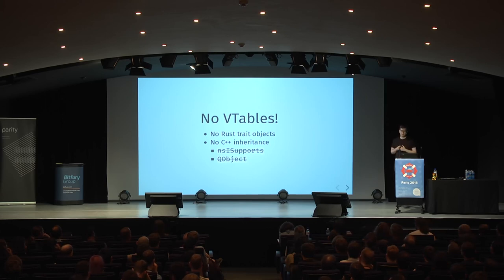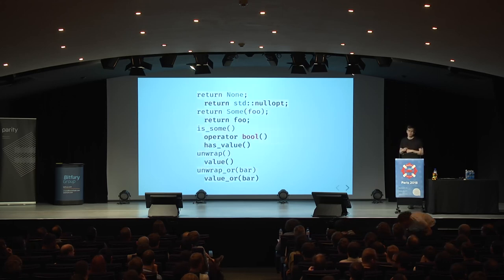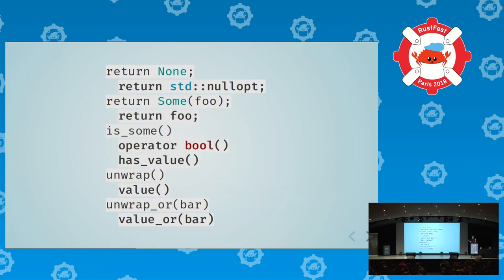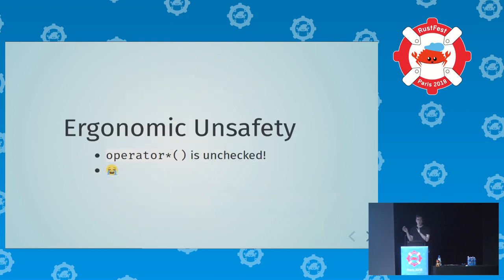Let's look at more rustic C++ types. There's std::optional, which is like Option in Rust. In Rust we can return None; in C++ we return std::nullopt. In Rust we return Some(foo); in C++ we just return foo and implicit conversion happens. We can ask if an optional wraps a value, get that value, or get it with a default. One thing to be aware of: the most ergonomic way to extract a value from std::optional is operator*, which is unchecked and therefore unsafe — so watch out for that.